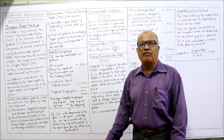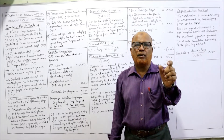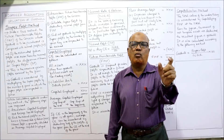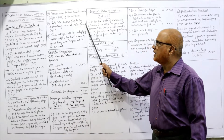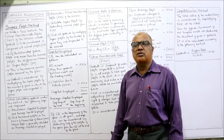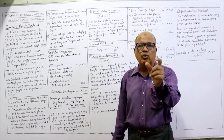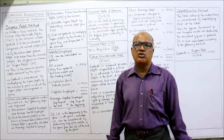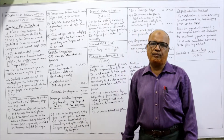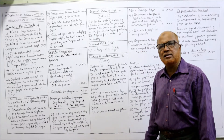Step 4: Calculate super profit by deducting normal profit from future maintainable profit. The formula is: Super Profit (SP) = Future Maintainable Profit (FMP) − Normal Profit (NP). Step 5: Find out goodwill by multiplying super profit by the number of years they are expected to be earned in the future. Goodwill = Super Profit × Number of Years of Purchase. These are the five steps to be adopted for calculating goodwill under the super profit method.